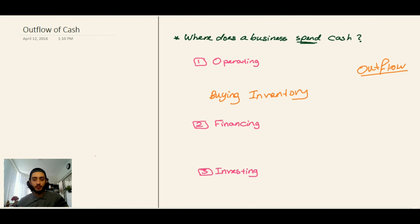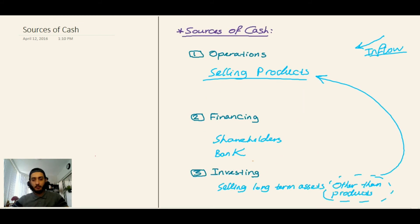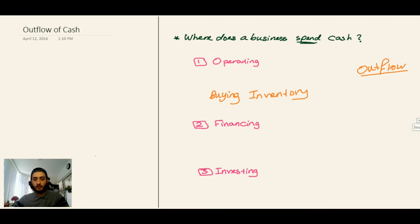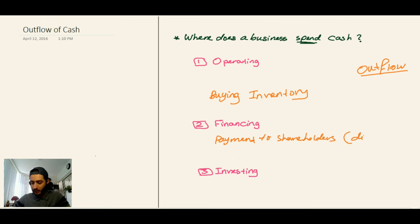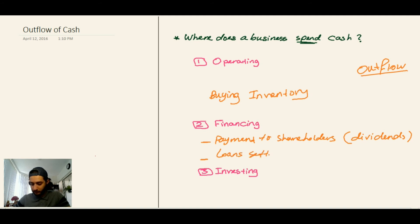What about financing activities? We said that any money coming from shareholders or a bank will be financing activities. So for outflow, any payment to shareholders — like dividends — will be an outflow, and also any settlement for loans. So if we pay the loan back to the bank or financial institution we borrowed from, that will be a financing activity.